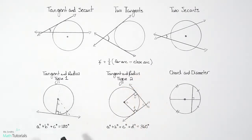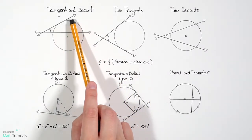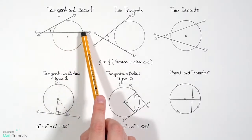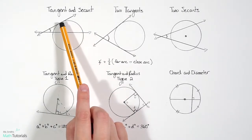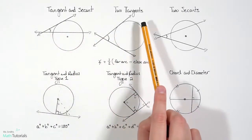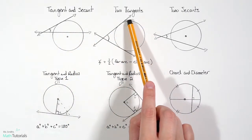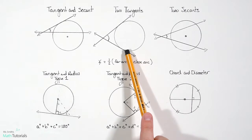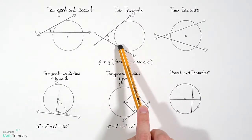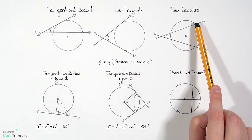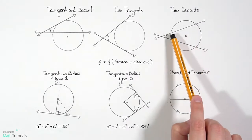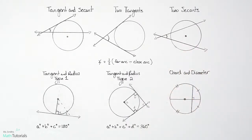In each picture, the far arc measure goes from here to here in degrees, and the close arc measure goes from here to here in degrees. For the two-tangent case, this would be our far arc and this the close arc. For two secants, this would be the far arc measure and this the close arc measure.